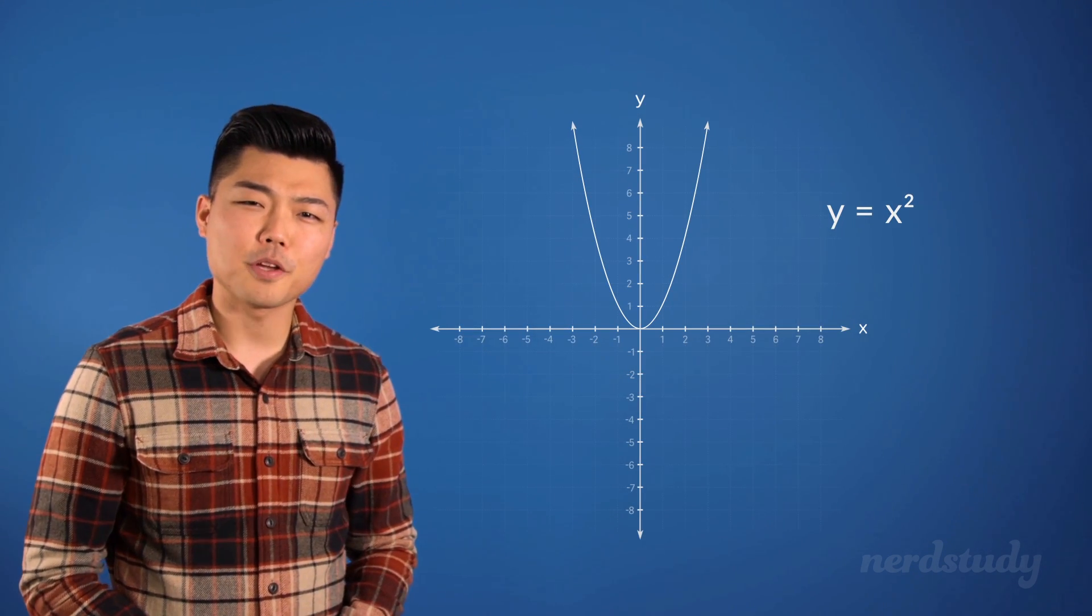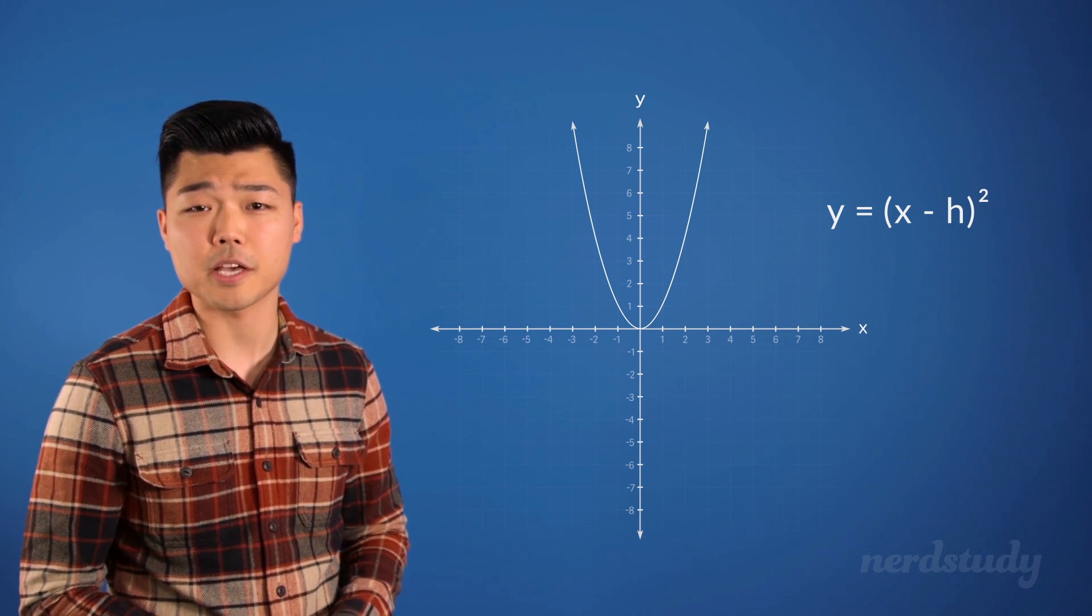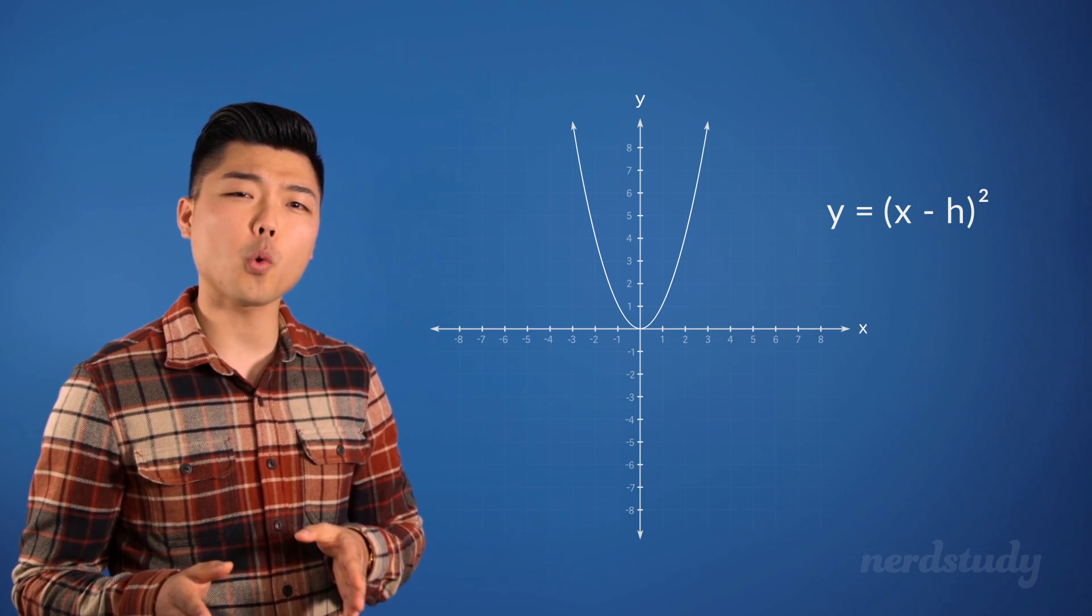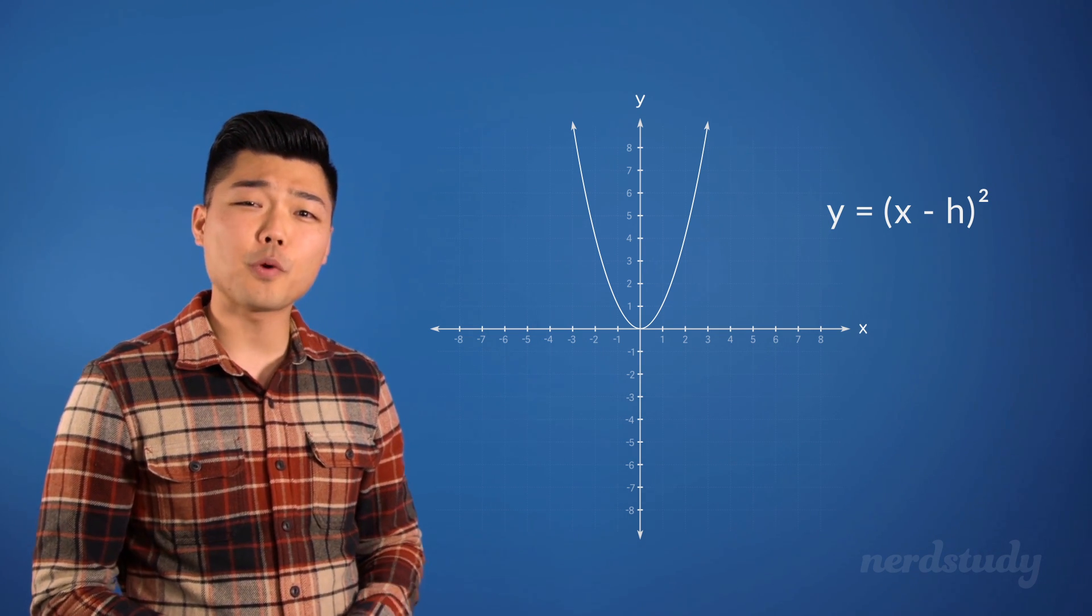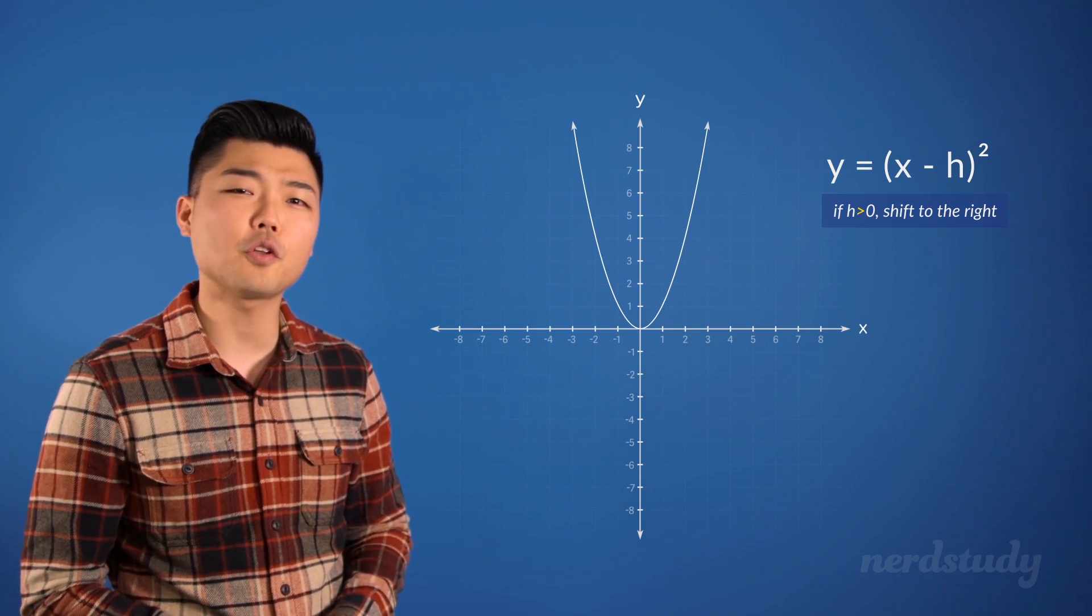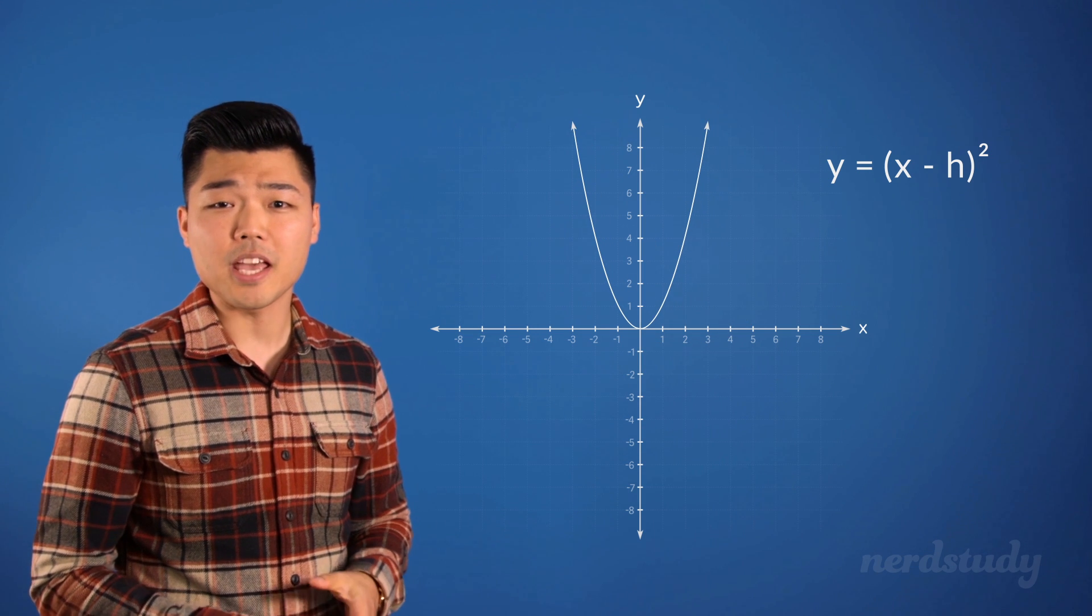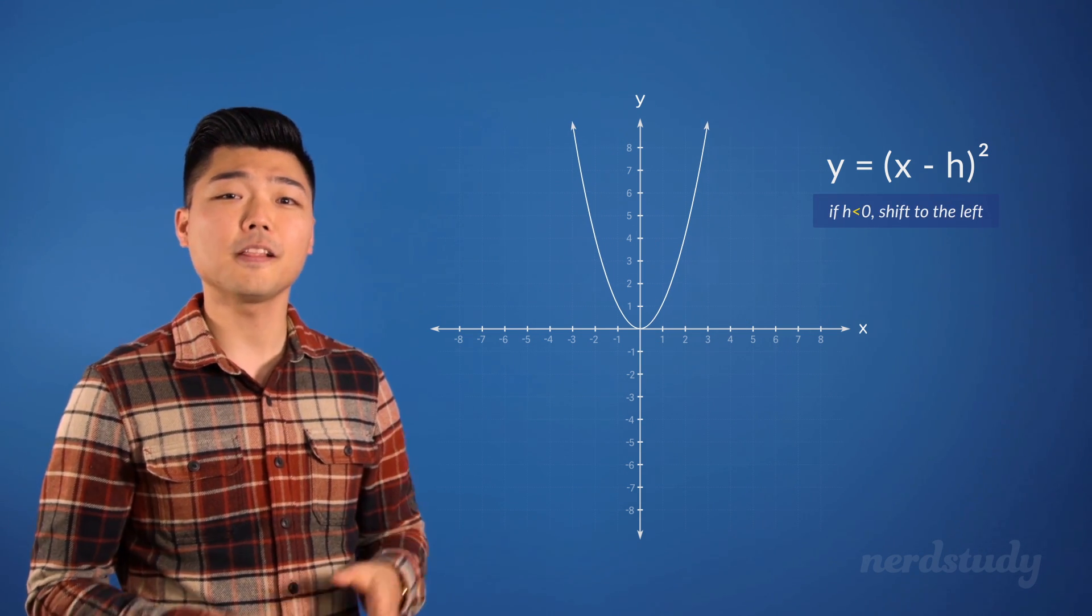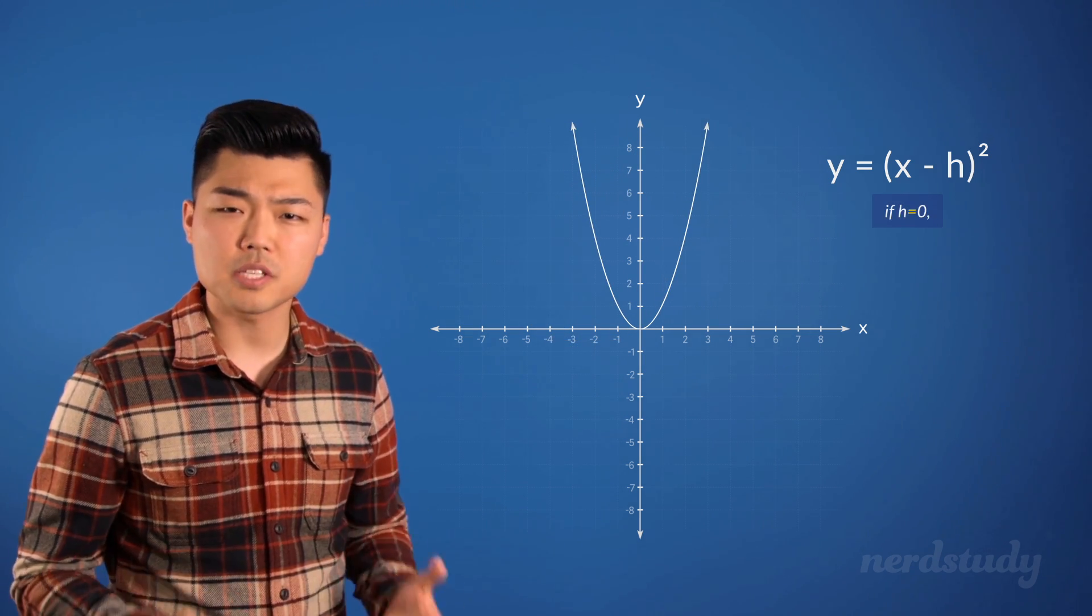Now there's also this equation which is essentially the same as y equals x squared except that this graph has a horizontal translation applied to it. When written as y equals (x minus h) squared, if h is greater than 0, the graph will shift to the right by h units. When h is less than 0, the graph will shift to the left by h units. And what about when h is 0?